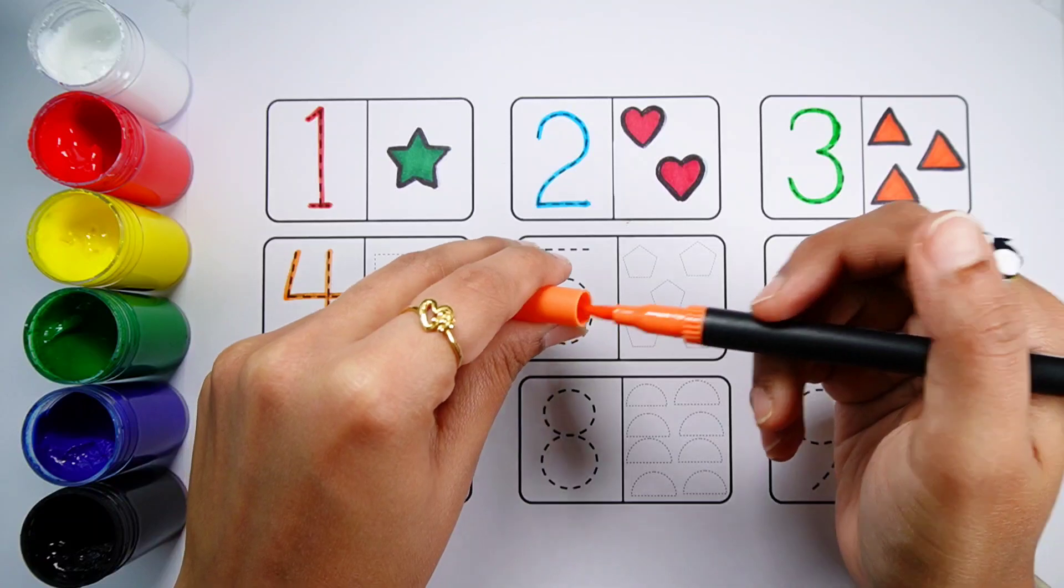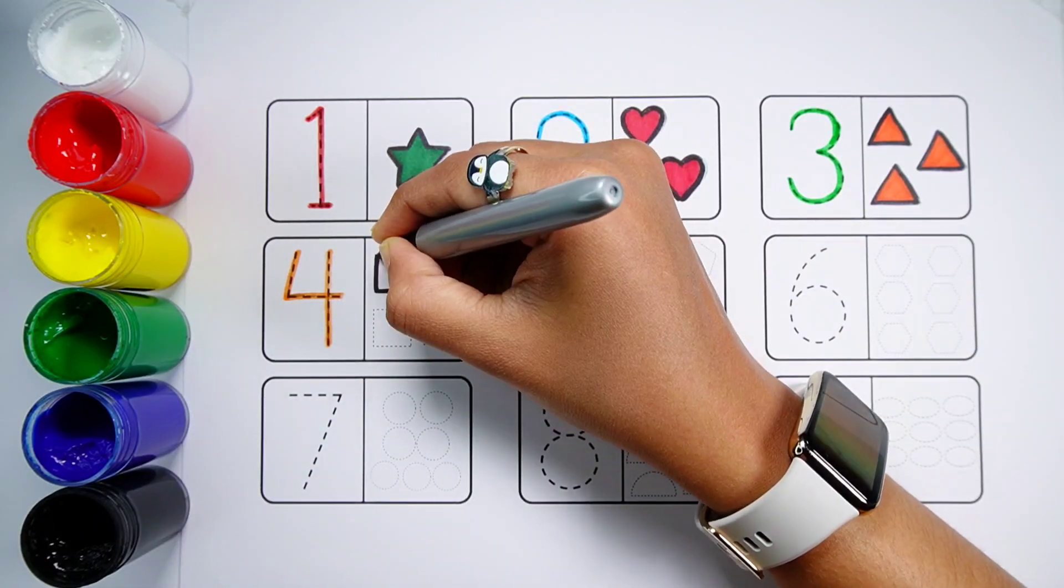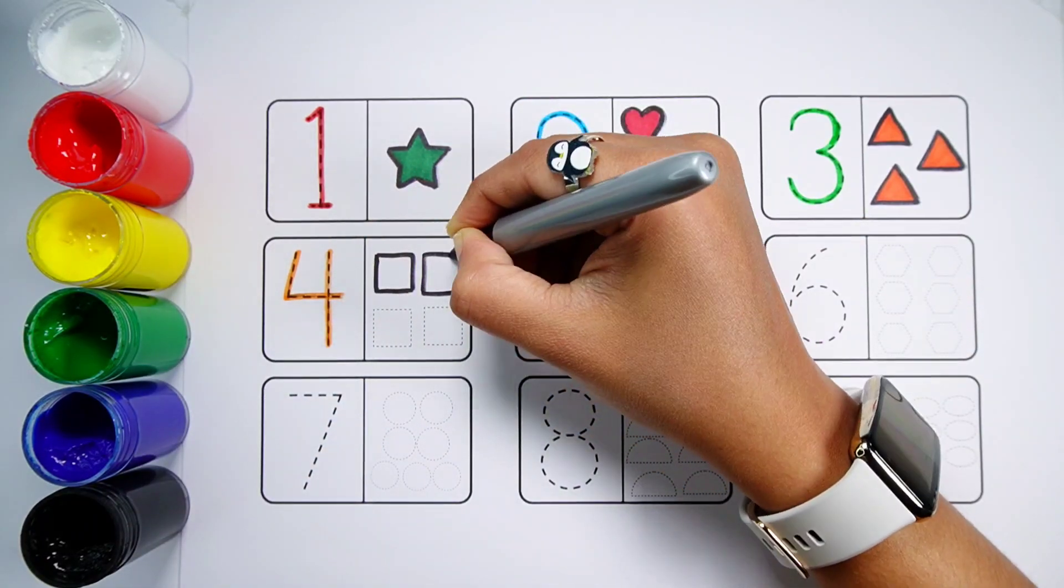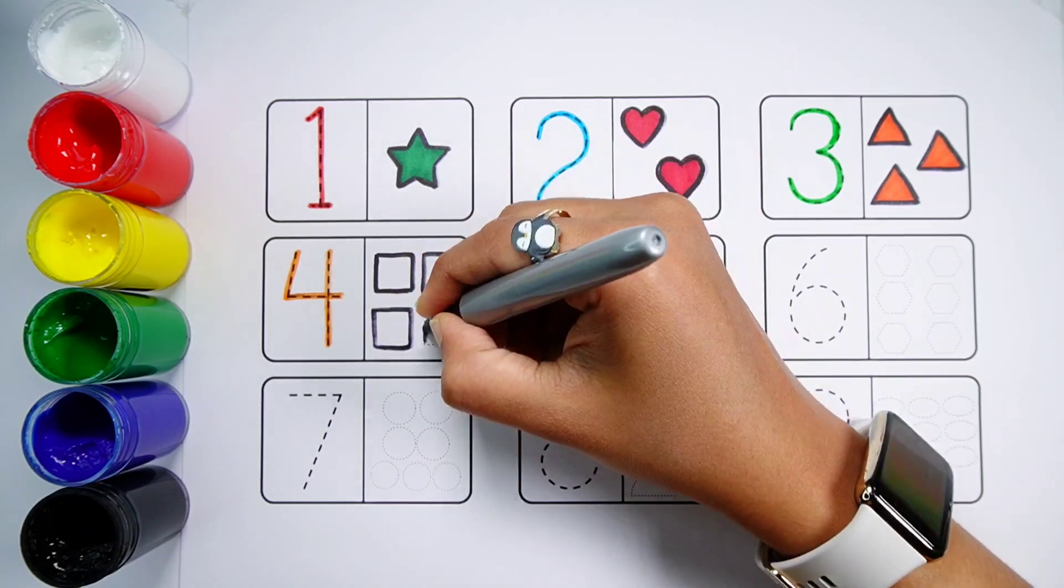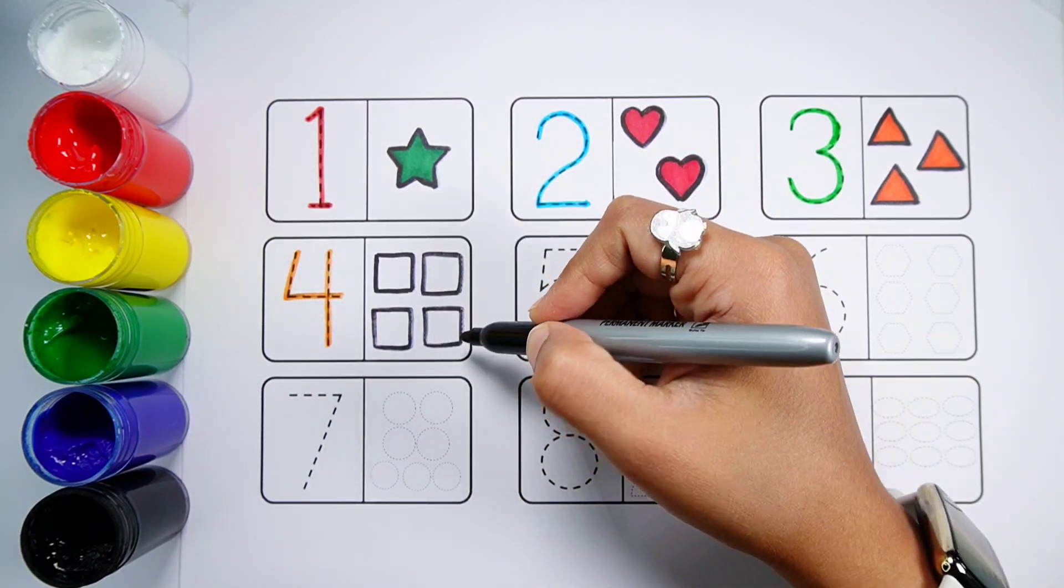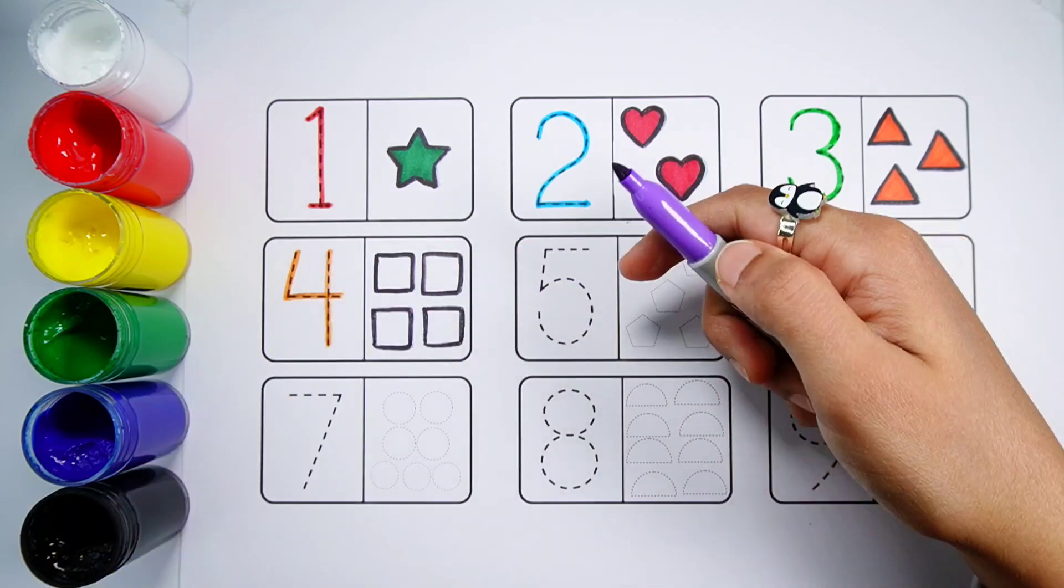Number 4. One, Two, Three, Four. Four Squares. Violet Color.